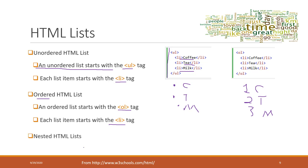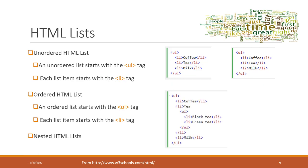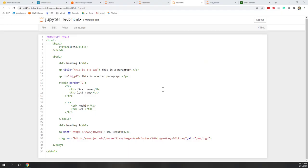Lists can also be nested — a lot of elements in HTML can be nested. For example, we can define an unordered list with a first item, second item, and third item, where the second item itself contains an ordered list with 'black tea' as the first nested item and 'green tea' as the second.